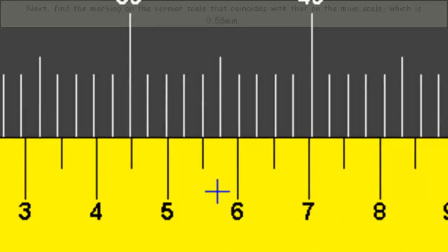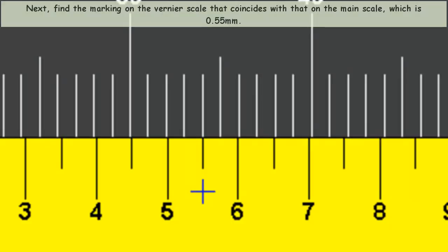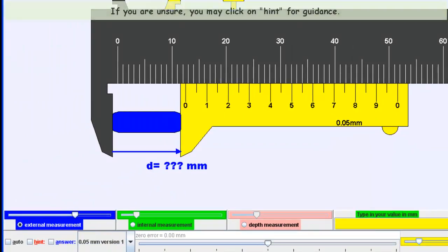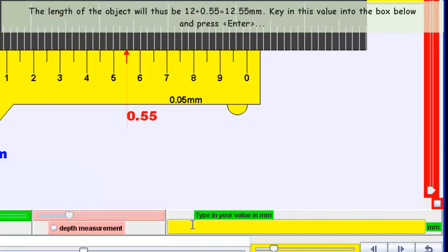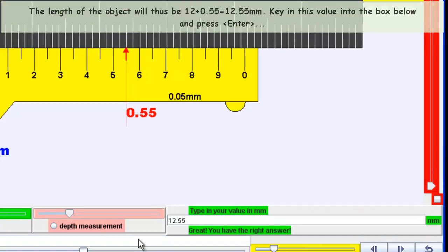Looking at the vernier scale, you can see that the 5.5 mark is perfectly aligned with the main scale. You can try to key in the answer. The answer is 12.55 mm.